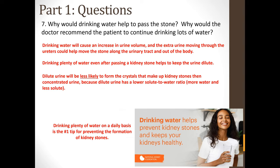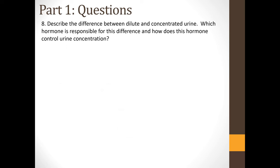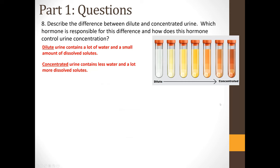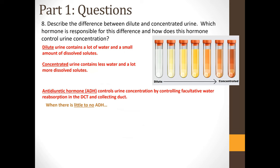Question 8: Describe the difference between dilute and concentrated urine. Which hormone is responsible, and how does it control urine concentration? Dilute urine contains a lot of water and a small amount of dissolved solutes, so it looks very light yellow to clear. Concentrated urine contains less water and more dissolved solutes, so it is a much darker color. Antidiuretic hormone (ADH) controls urine concentration by controlling facultative water reabsorption in the DCT and collecting duct. When there is little to no ADH, no aquaporins are inserted into the cell membranes, and very little water is reabsorbed, resulting in a large volume of dilute urine.